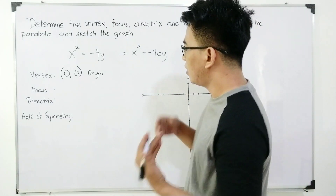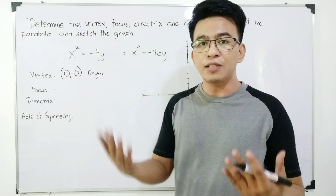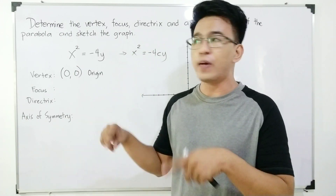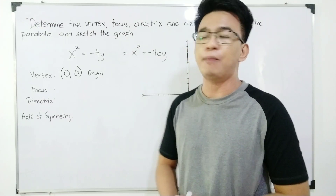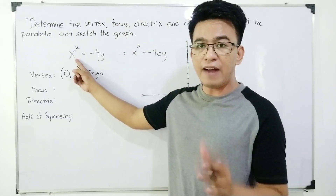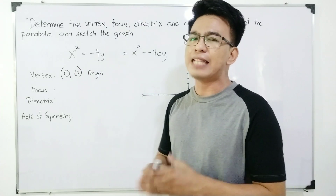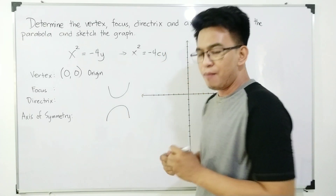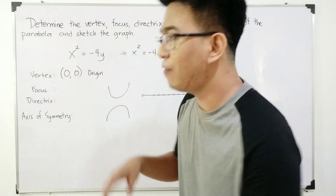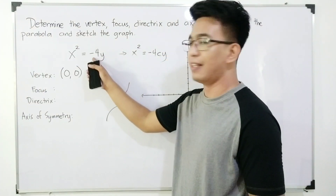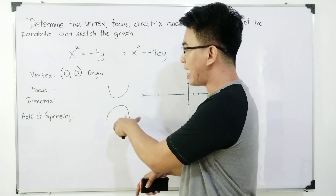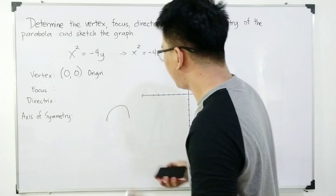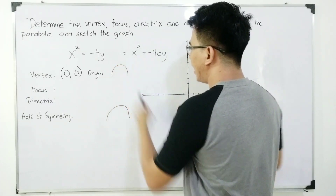After getting the vertex, before we go to the focus, let us determine the orientation of our parabola. As I said in a previous video, if the variable x has the square or the power of 2, it's either upward or downward opening. The defining factor is the sign: if it is negative, the opening is downward; if positive, upward. Since this one is negative, the orientation is downward.